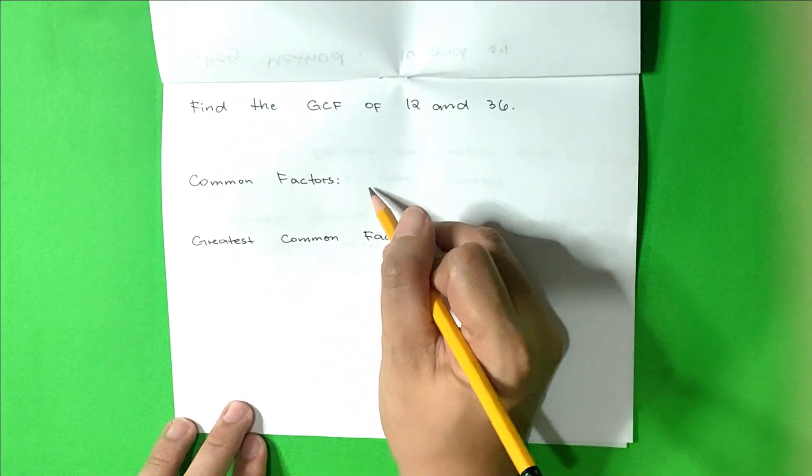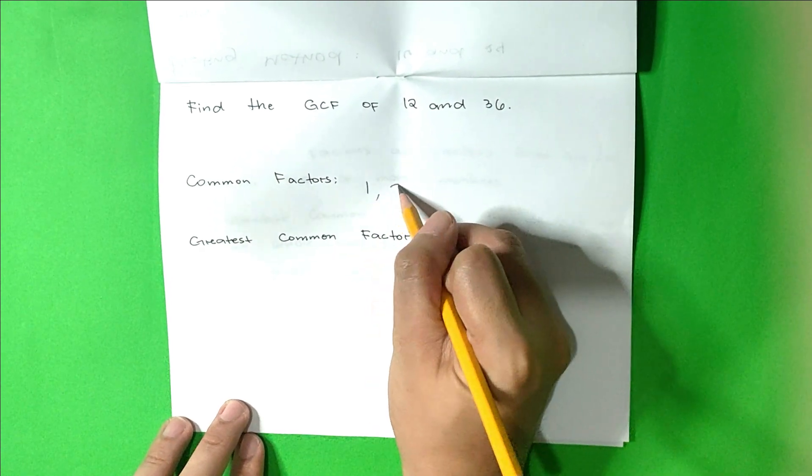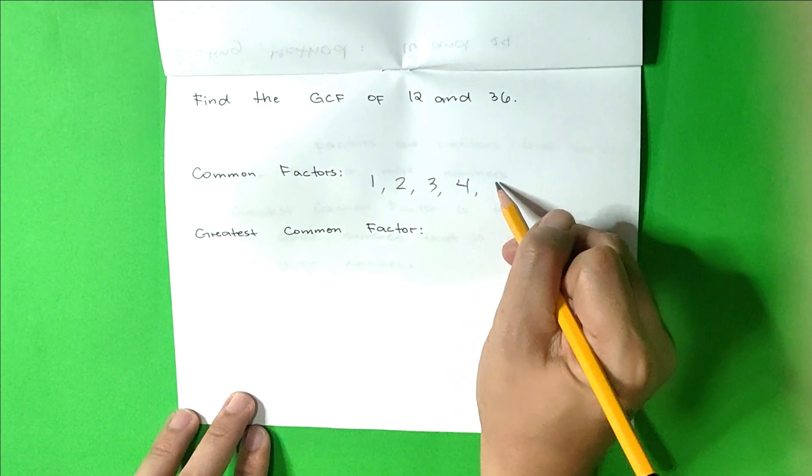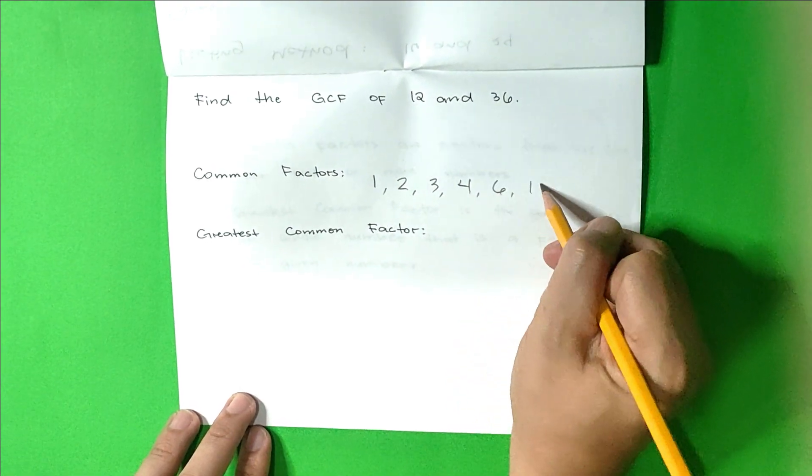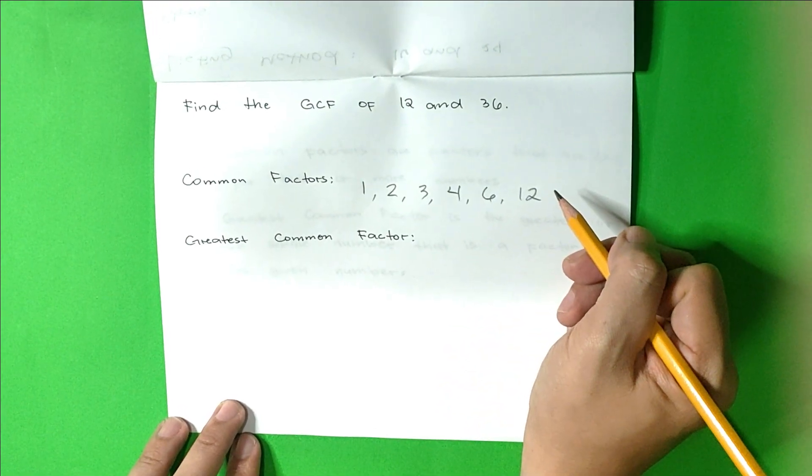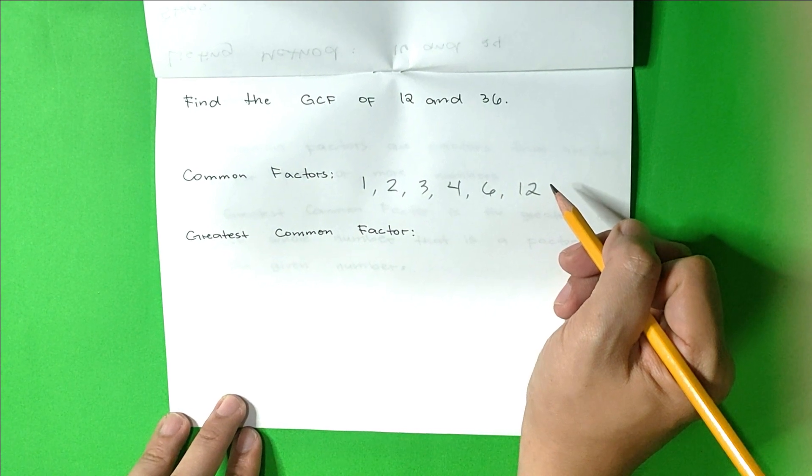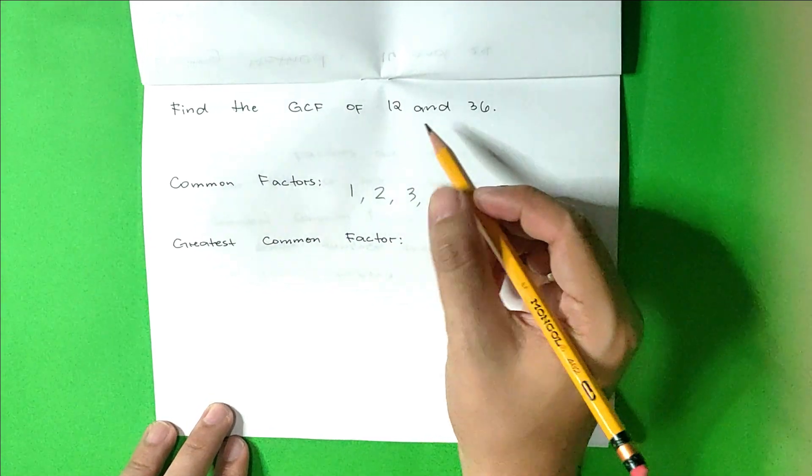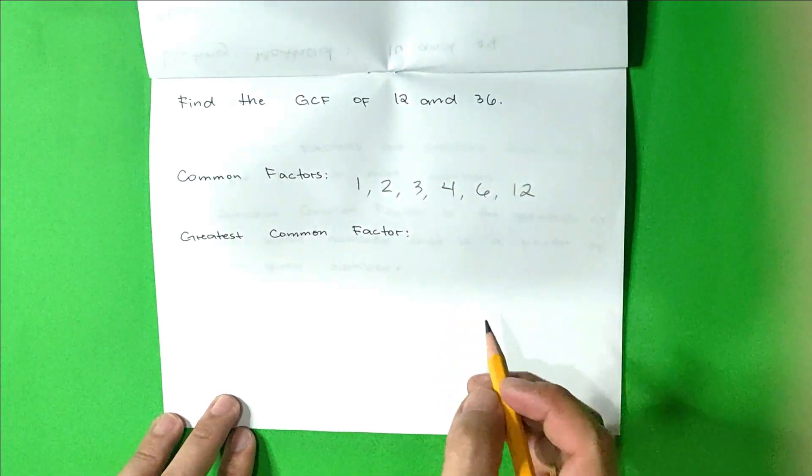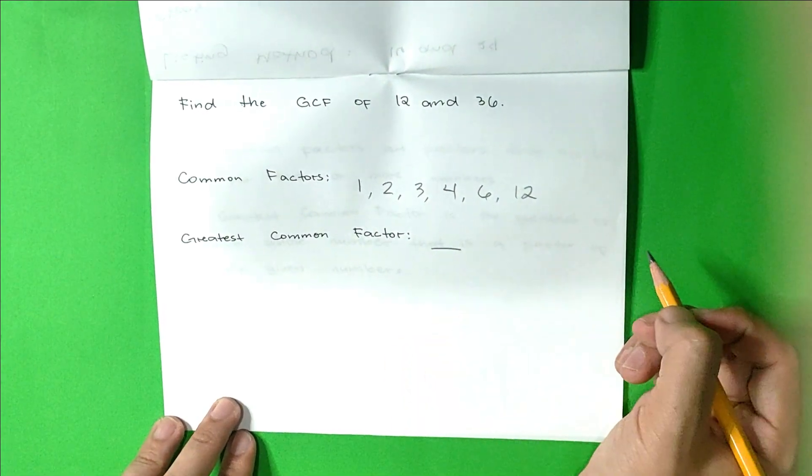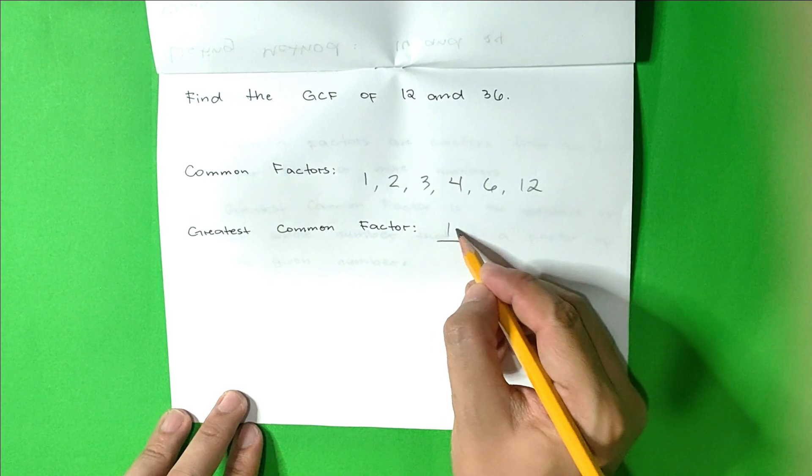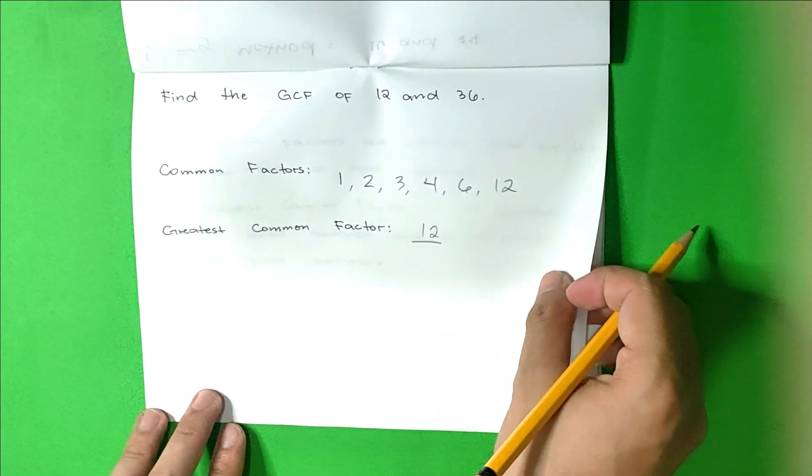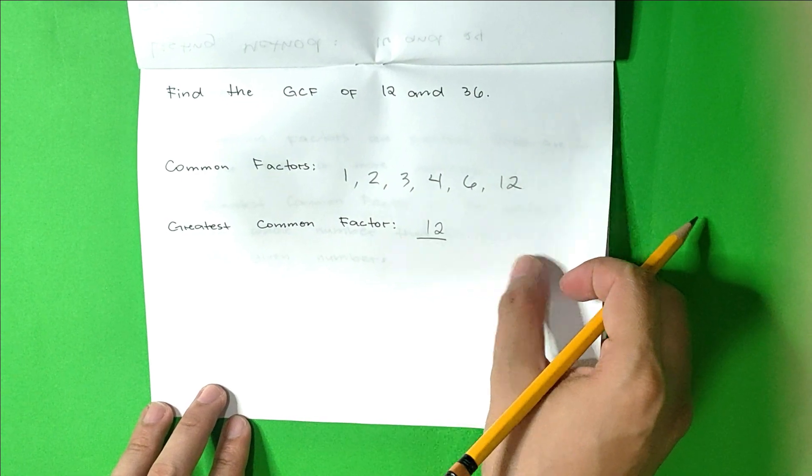Alright. If your common factors are 1, 2, 3, 4, 6, and 12, you are correct. And what is now the greatest common factor of 12 and 36? Correct, it's 12. So the greatest common factor of 12 and 36 is 12.